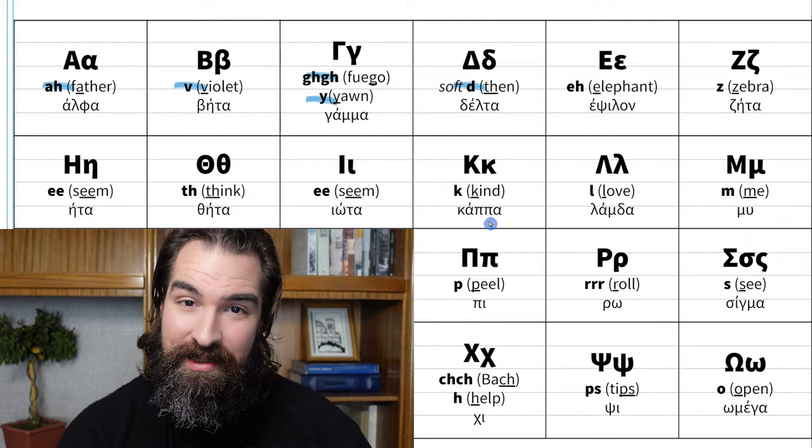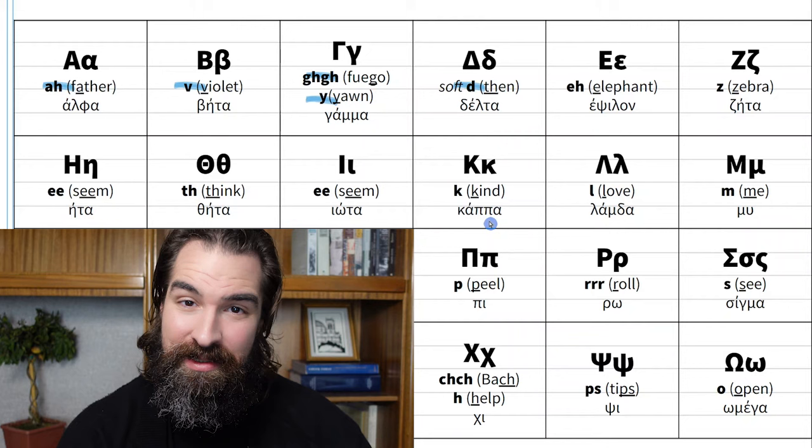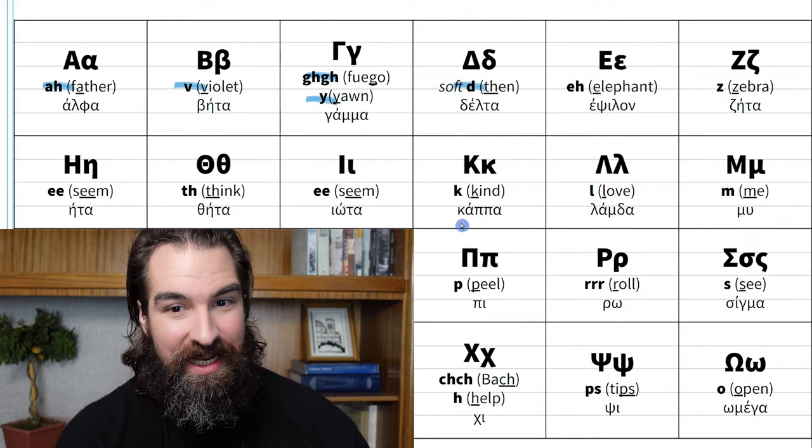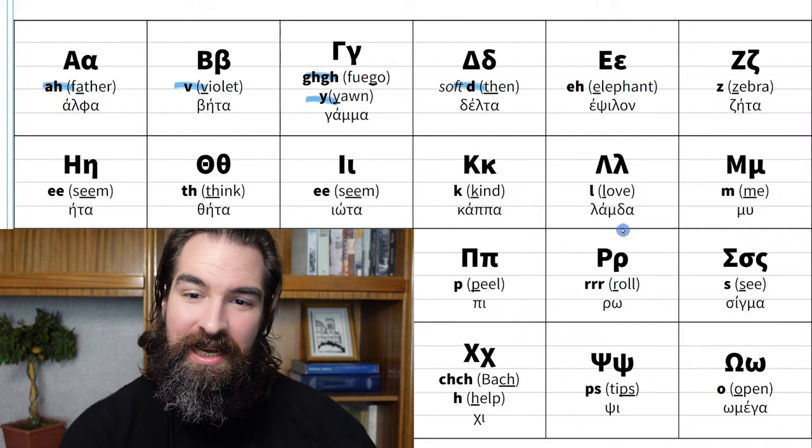Kappa looks like a K and sounds like a K, like the word 'kind.' Then we have lambda — the Greek version of L. It makes an L sound like the word 'love.' Lambda.